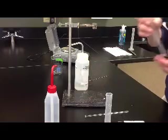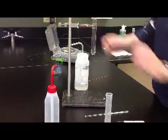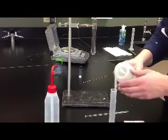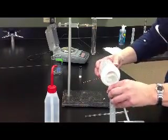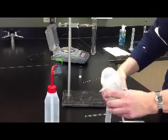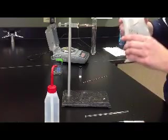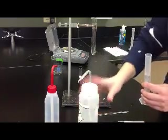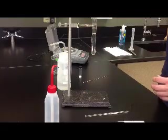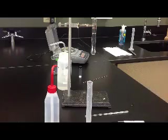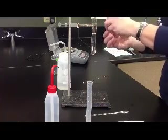You're going to clamp a clean, dry test tube to a ring stand, and you're going to add approximately 20 milliliters of water. Make sure that your water is distilled water. When in doubt, refill your bottle.